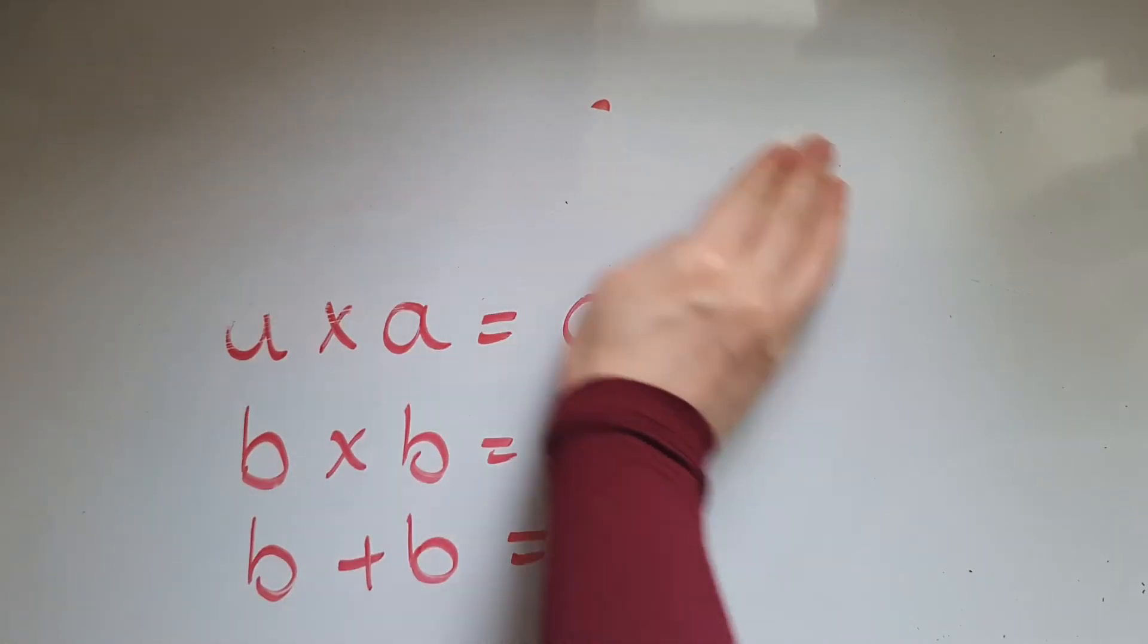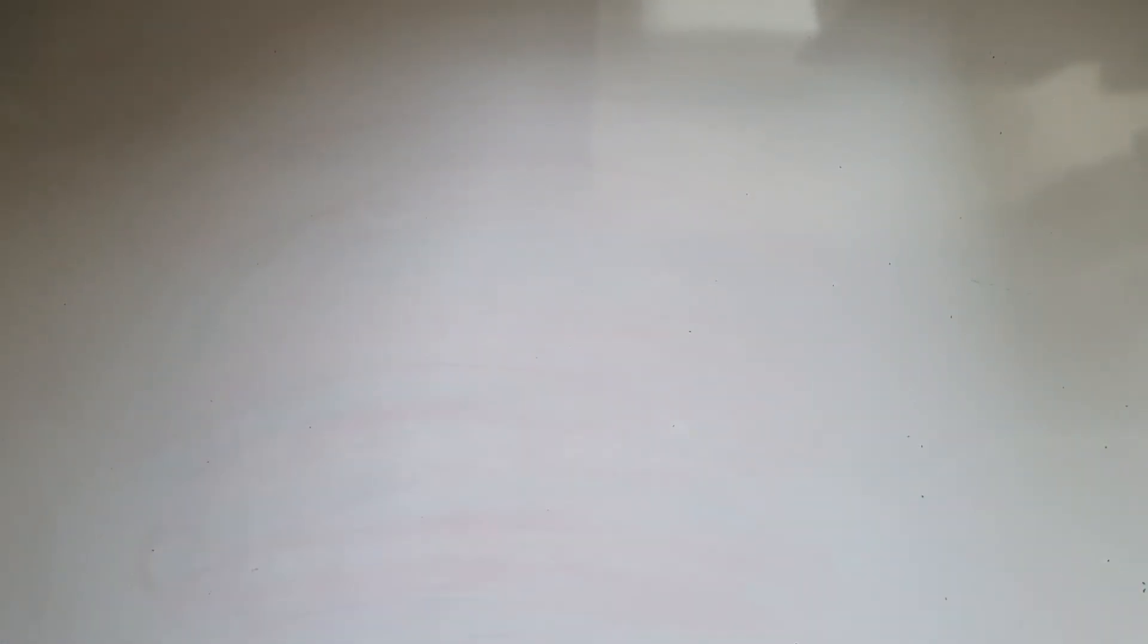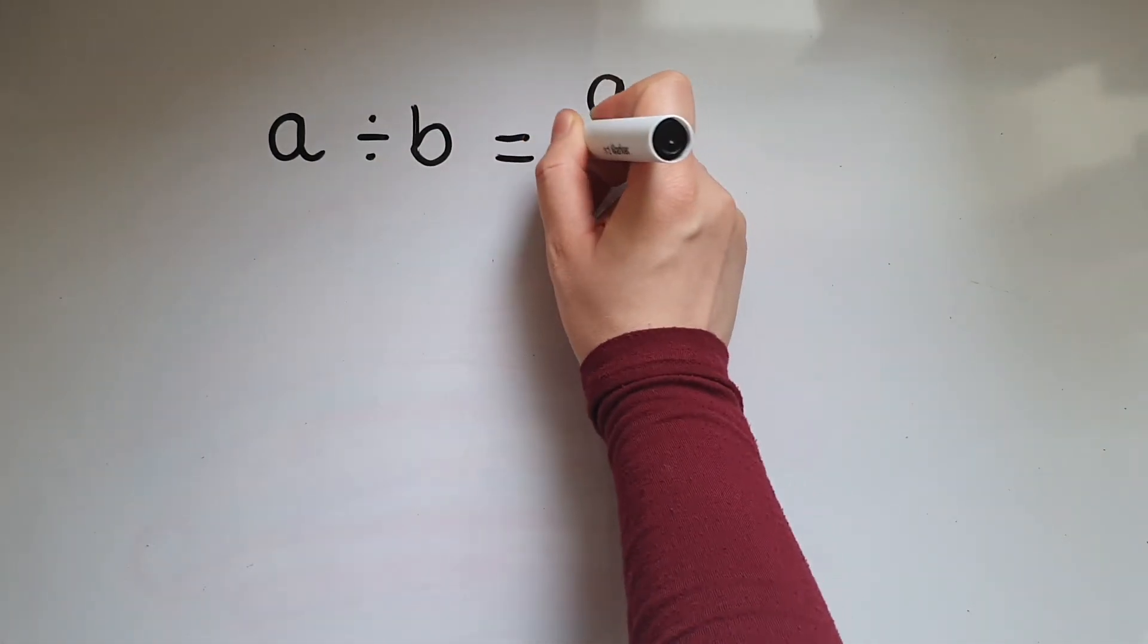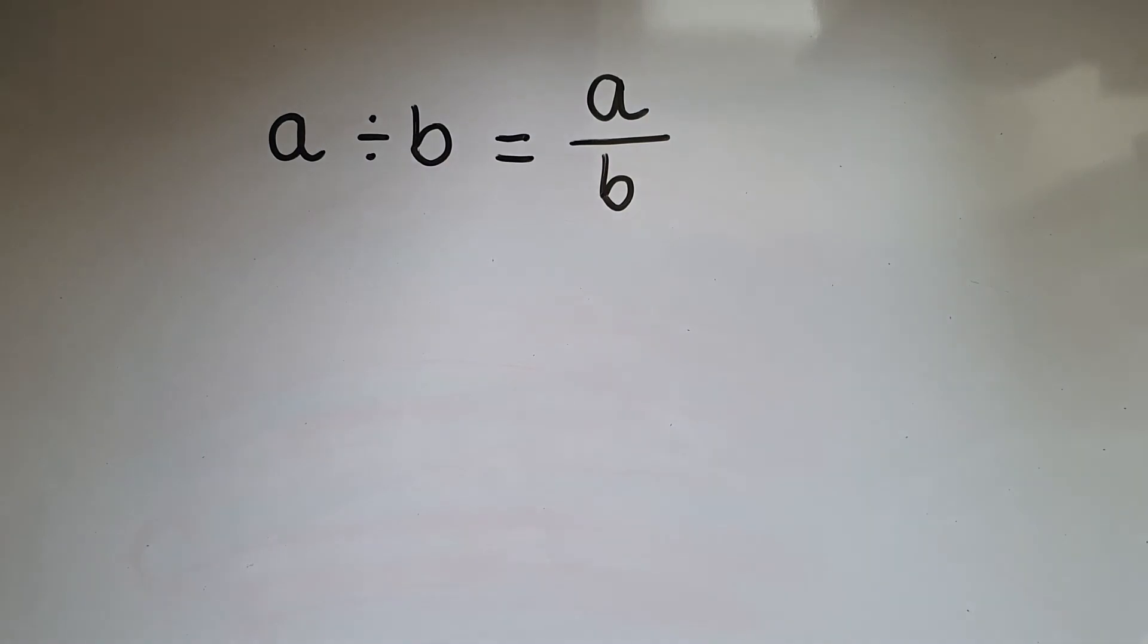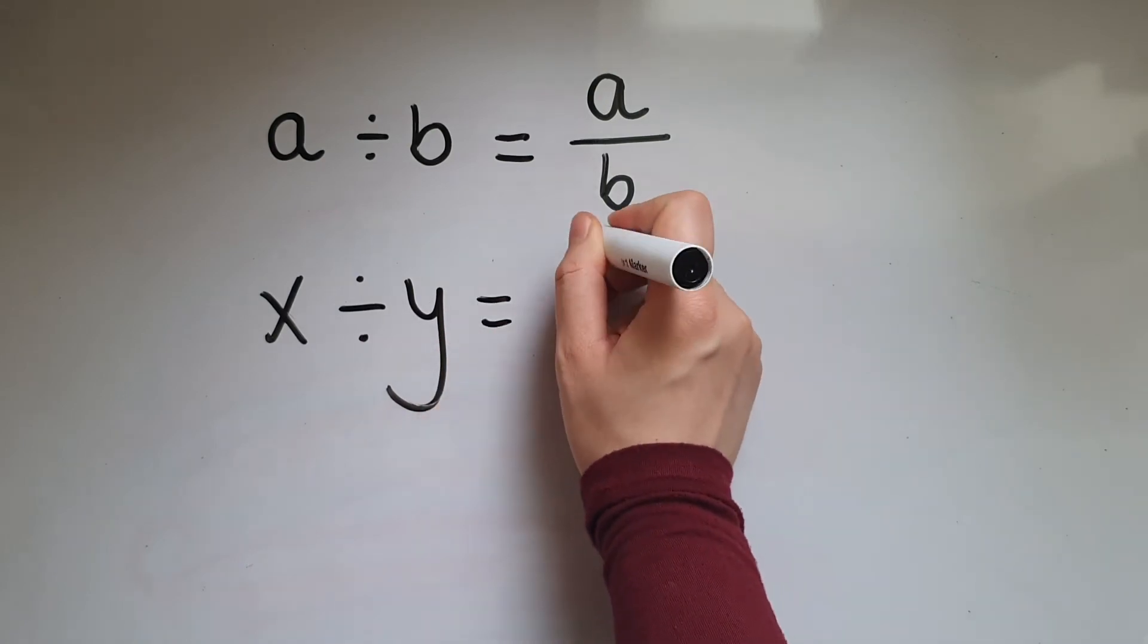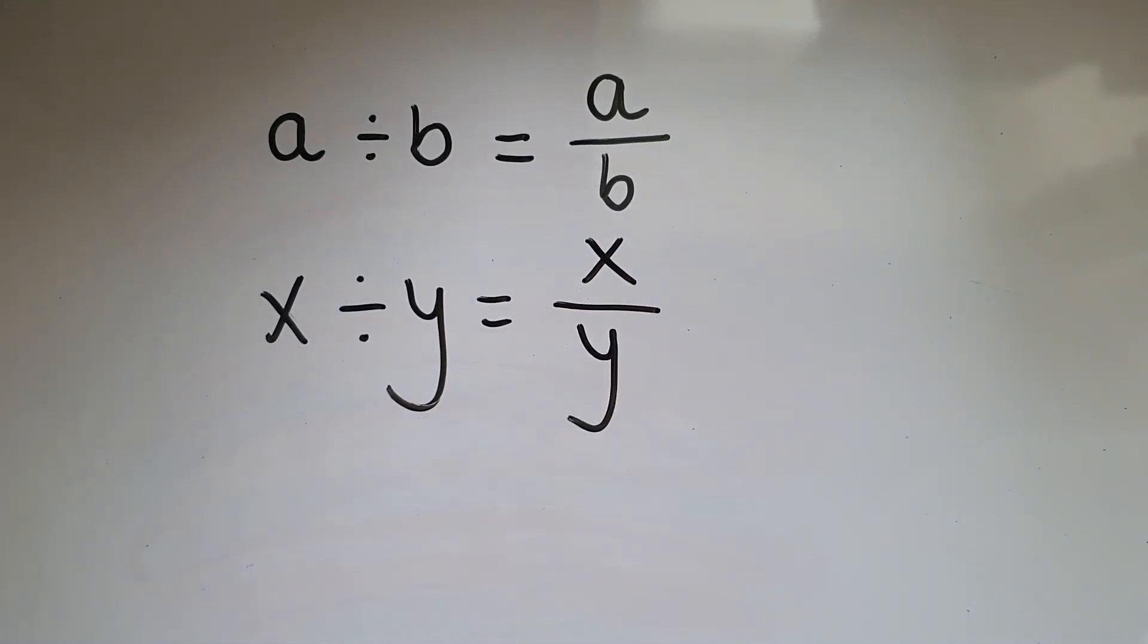And if we've got division, there is a short form as well, and I bet you know this already. If I have A divided by B, we should write that as A over B as a fraction. So, we keep the order putting this number at the top and this one at the bottom.